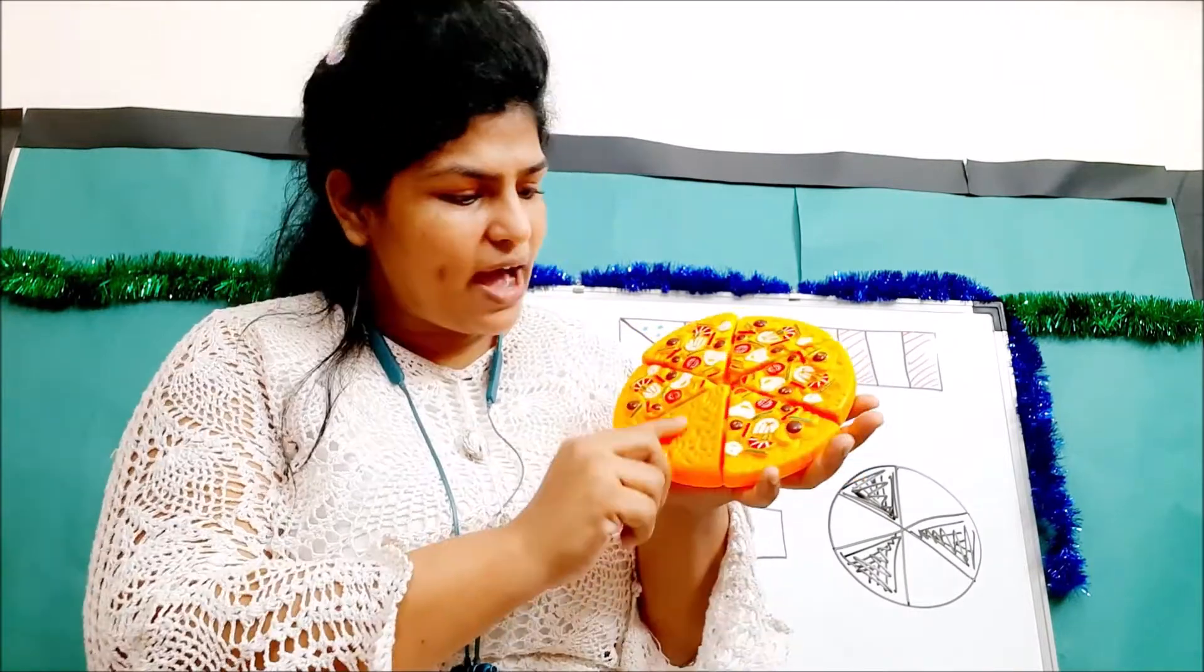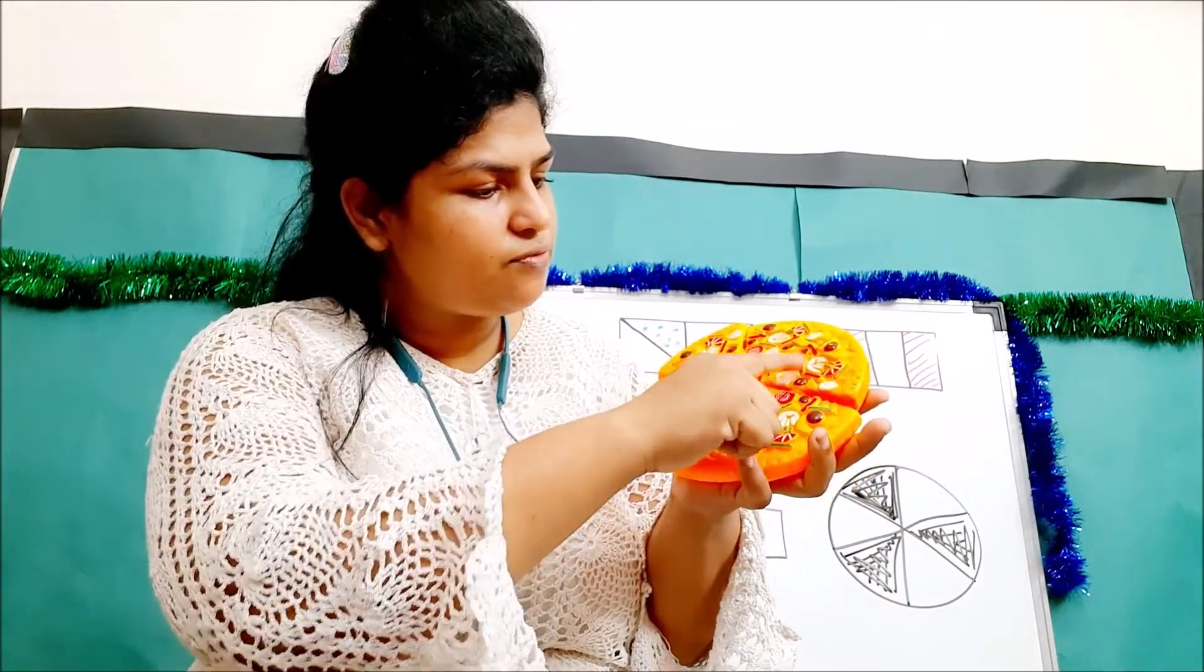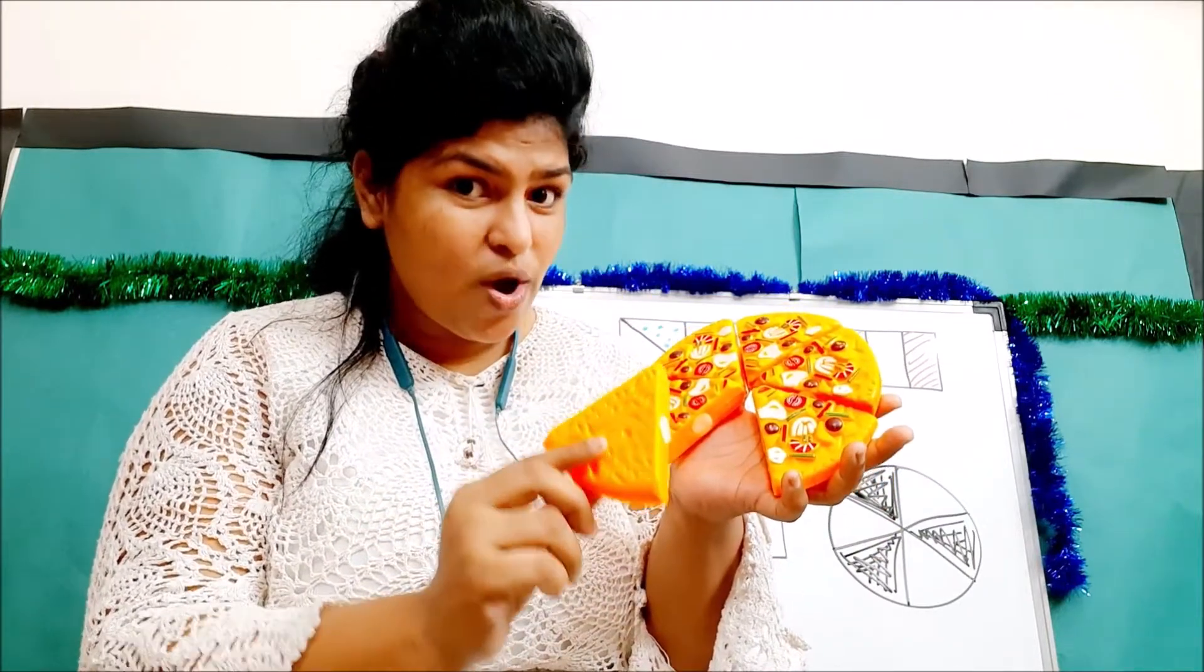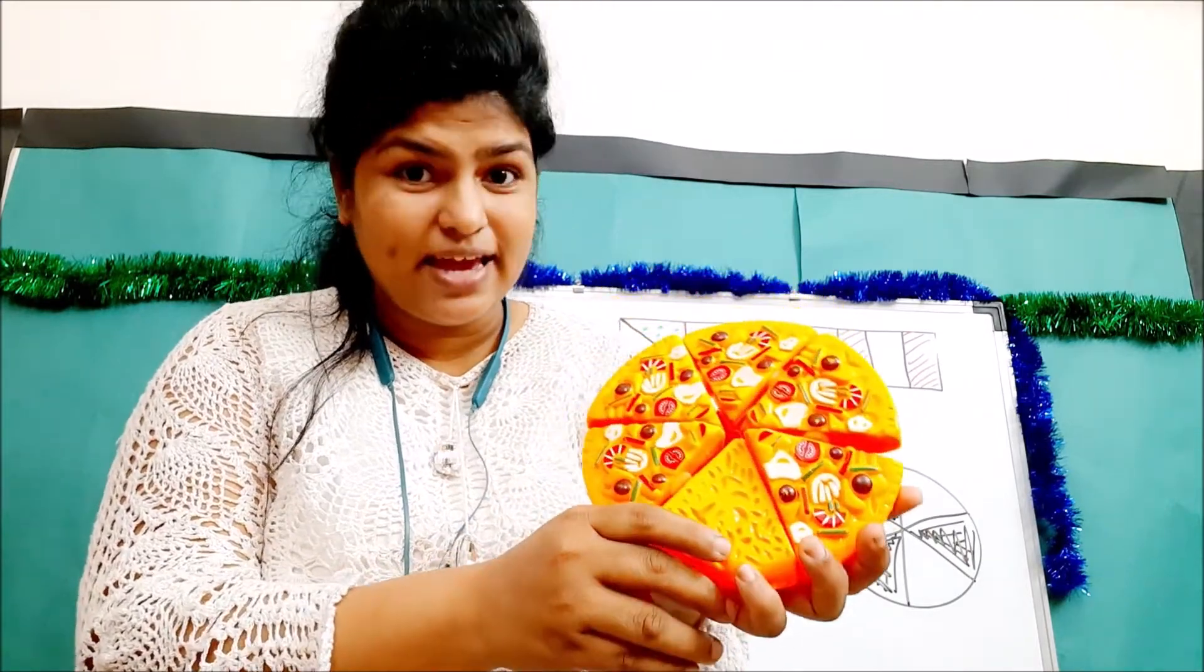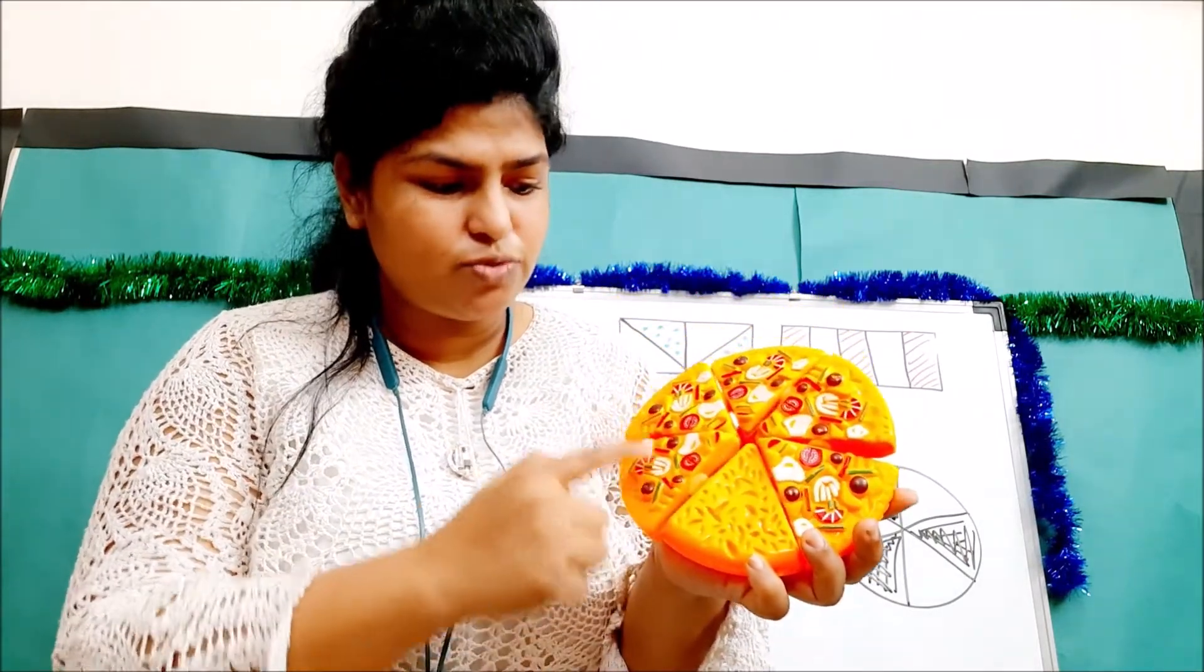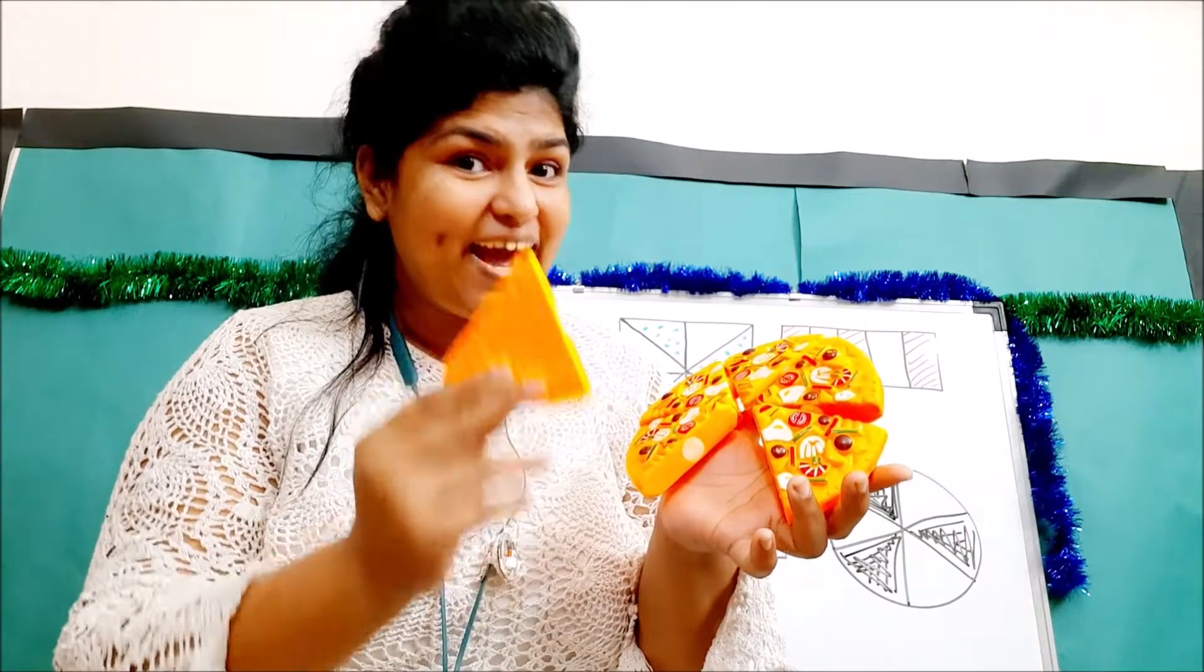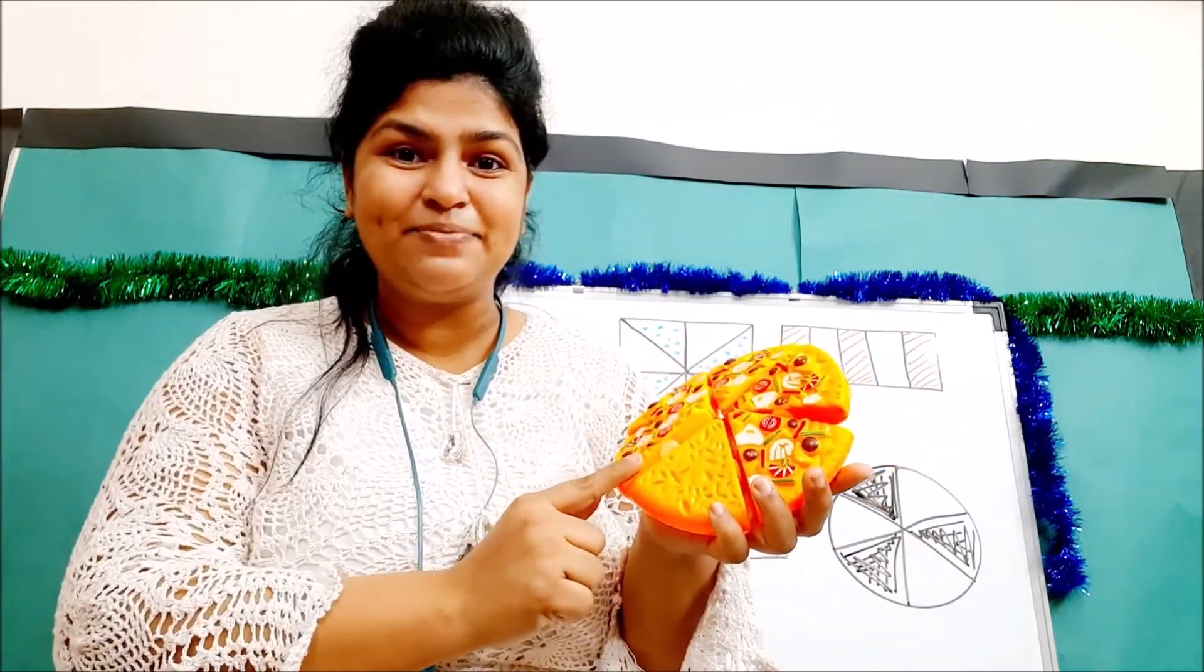Tell me how much pizza did I eat right now? I ate one piece out of how many pieces? One, two, three, four, five, six - there were six pieces and I ate one out of them. So I've eaten one out of six. Again I repeat, there were six pieces and I ate one, so how much did I eat? I ate one out of six pieces.